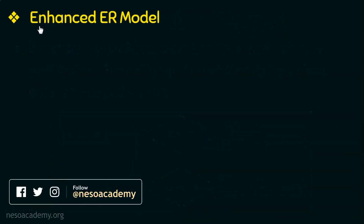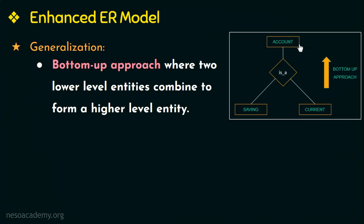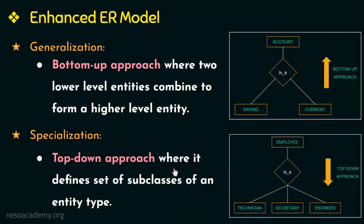Next, let us see a few terminologies in the Enhanced ER model or EER model. The first is generalization — a bottom-up approach where two lower-level entities combine to form a higher-level entity. The next is specialization — a top-down approach that defines a set of subclasses of an entity type. Specialization is exactly the opposite of generalization, where an entity is divided into subclasses. With this, we come to the end of this video on relationships in ER diagrams. Thank you.